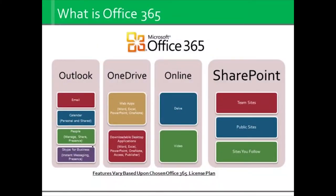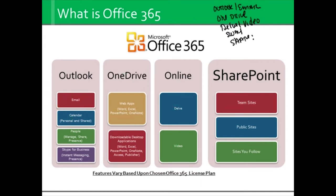So let's first start off with defining what is Office 365. In its simplest form, Office 365 is Outlook and Email. It is OneDrive for document storage. We have Delve and Video, which are both new. We even have something called Sway that was added, and we have SharePoint. And some of these apps literally have been out for less than a couple of weeks.